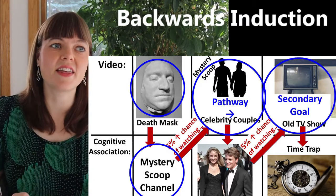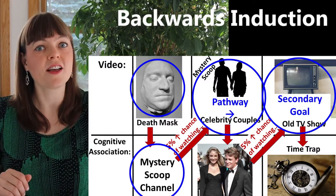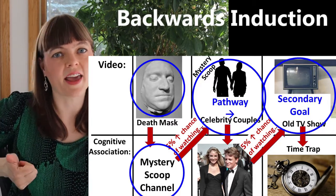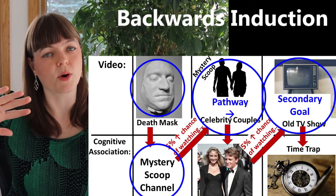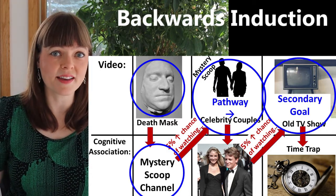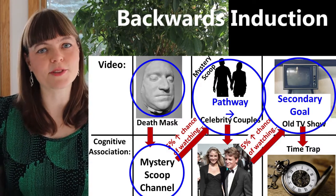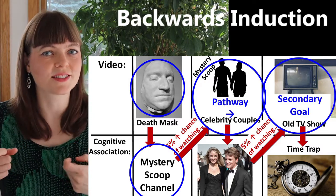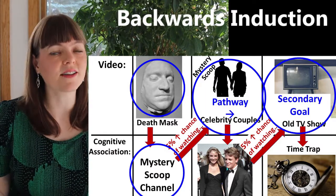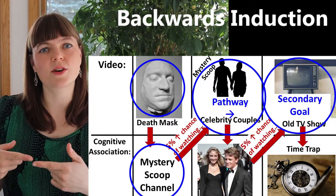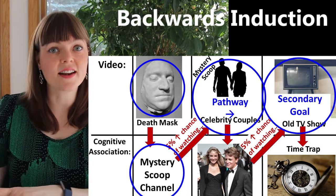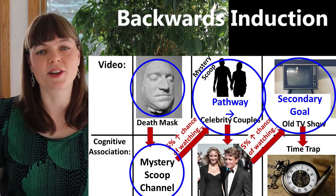This is not deterministic. The algorithm doesn't know for sure I'll click on the celebrity couples video after watching the death mask video. All it knows is that I have a higher probability of clicking on the second one after enjoying the first — maybe just a 10% higher probability, or not even that high. In a lot of ways, these algorithms are working with small percentages to nudge us toward rabbit holes. It depends on my mood, on the other content I've watched recently. It's just trying to work the system to increase the chances I'll follow pathways that end up in old TV show clips, because that is a time trap.